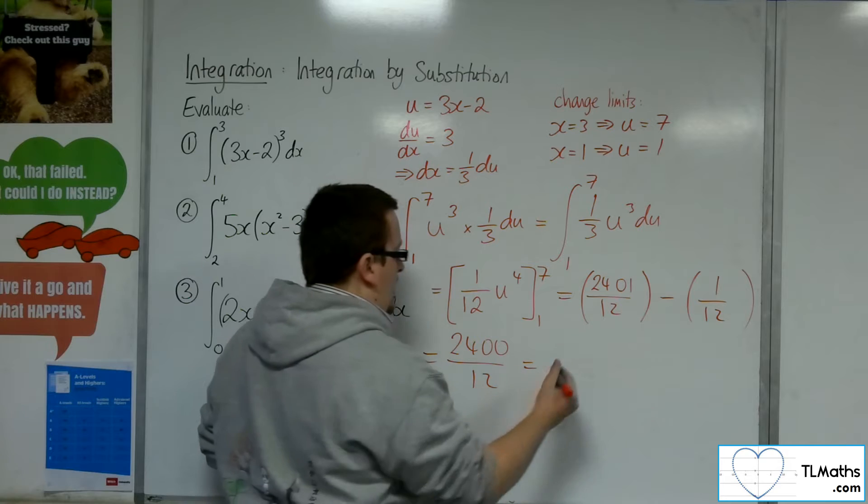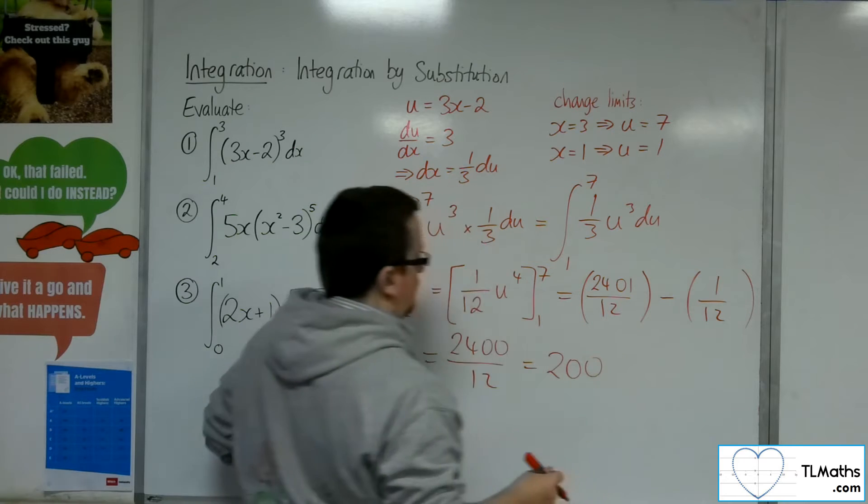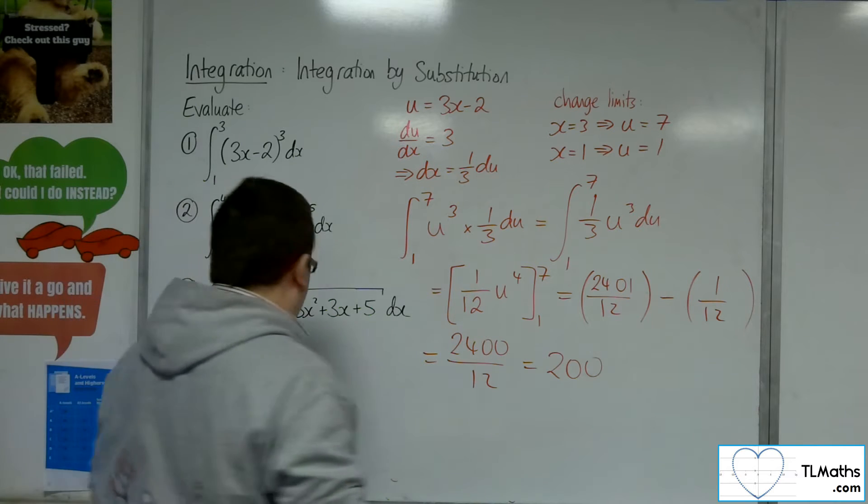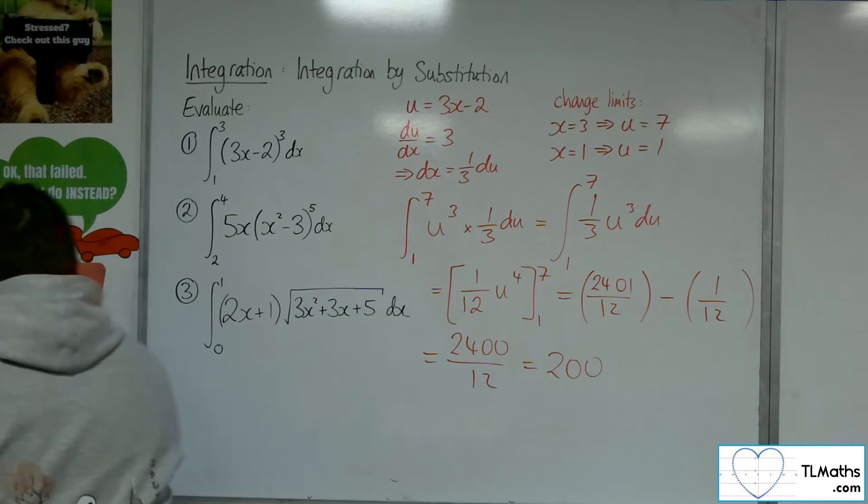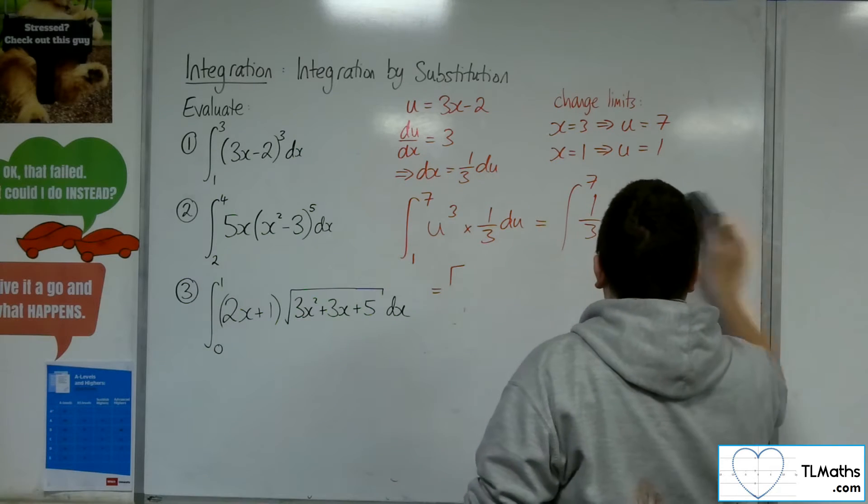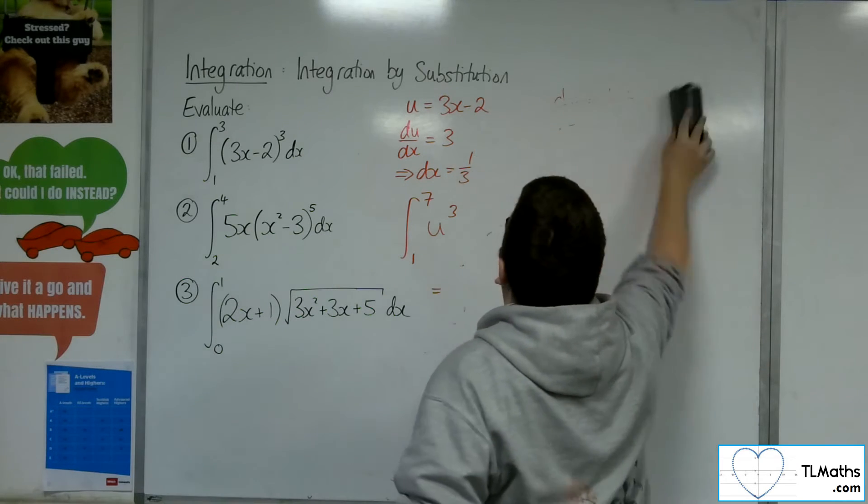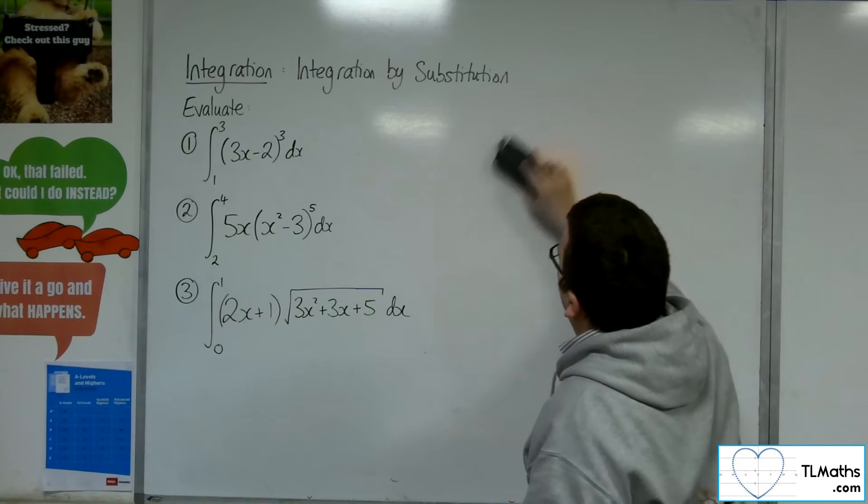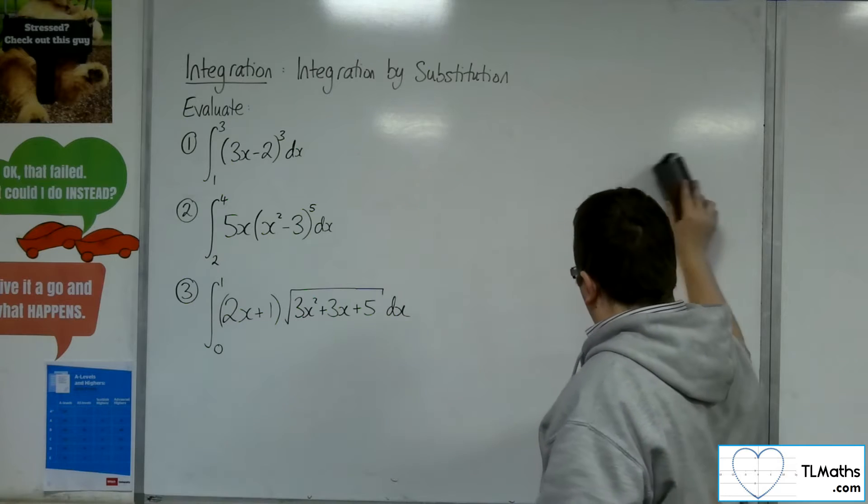Which I believe is just 200. So that is the answer to number 1. Nice number for question number 1. You've done A-level so much that when a nice number comes out, you start to kind of disbelieve it.